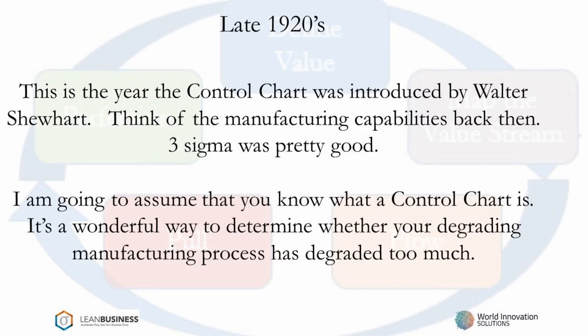The ability of manufacturers to produce quality products has improved greatly since then. During the early part of this century, Three Sigma was considered good manufacturing performance. Today, Three Sigma performance in manufacturing is not good. The improvement of manufacturing performance is the reason that control charts have lost value.